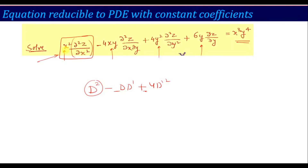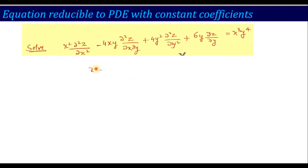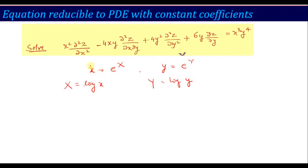We can reduce such an equation to a PDE with constant coefficients. The process is simple: let x = e^X and y = e^Y, so that capital X = log x and capital Y = log y. You need to remember this step. With this substitution, x·(∂/∂x) is replaced by capital D, and y·(∂/∂y) is replaced by capital D'. Furthermore, x²·(∂²z/∂x²) is replaced by D(D−1), y²·(∂²z/∂y²) is replaced by D'(D'−1), and x³·(∂³z/∂x³) is replaced by D(D−1)(D−2).